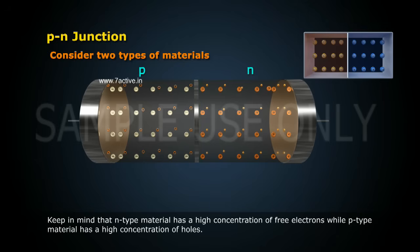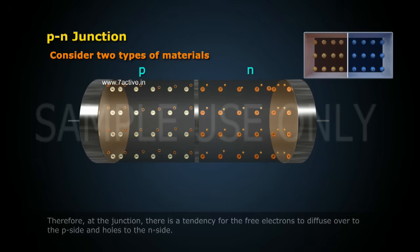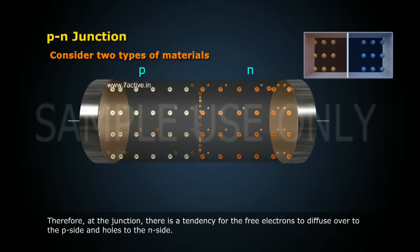while P-type material has a high concentration of holes. Therefore, at the junction, there is a tendency for the free electrons to diffuse over to the P-side and holes to the N-side.